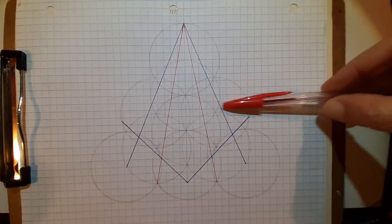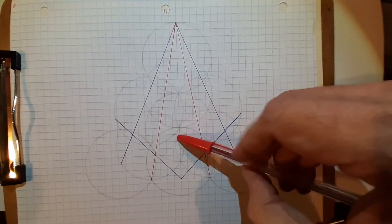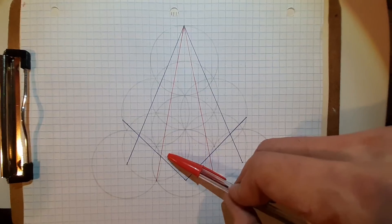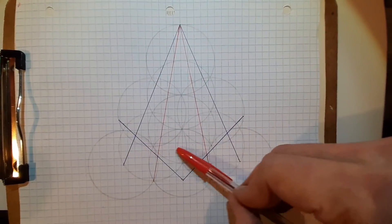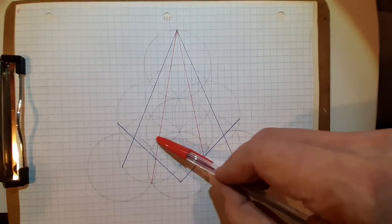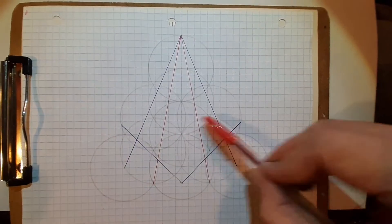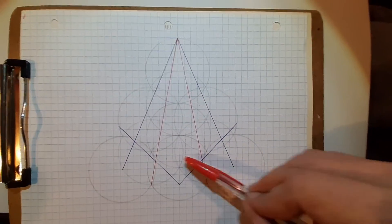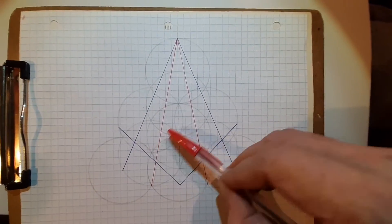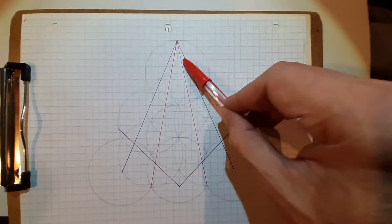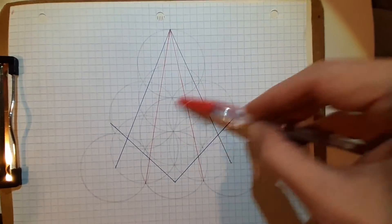So what I found was if you draw 10 circles - five, six, seven, eight, nine, ten - in this configuration.